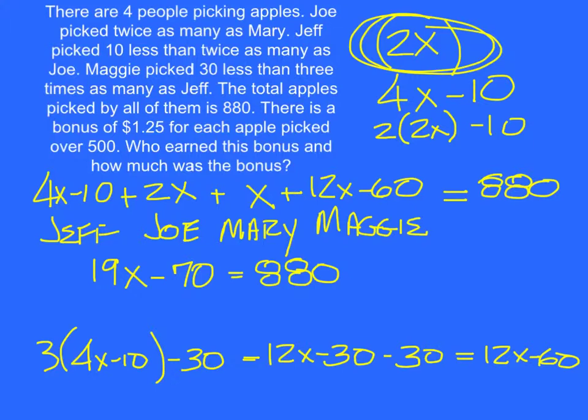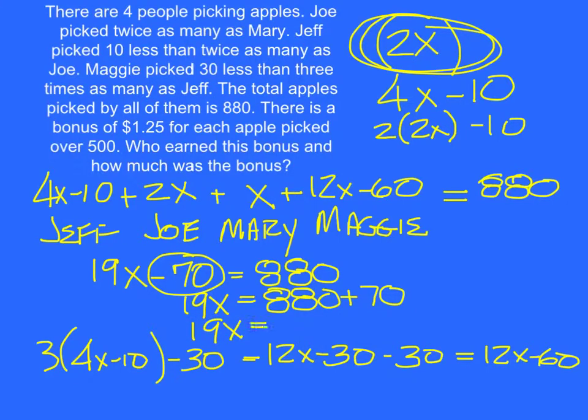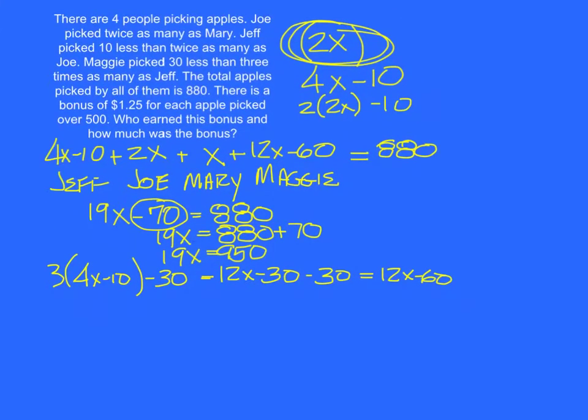So from that point, you would have to add—you do the opposite here. You add the 70 to this side, and it comes up to be 950. Now I'm kind of out of room here. This is not as neat as it should be, since we had to move that expression for Maggie to the bottom. But we are right here, and we are just going to go like this and do X equals 950 divided by 19.